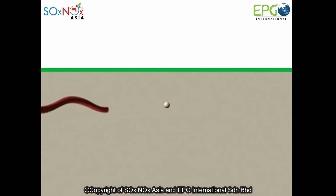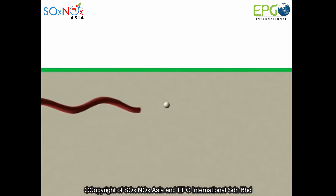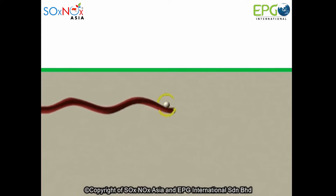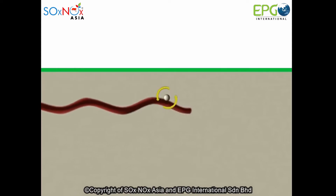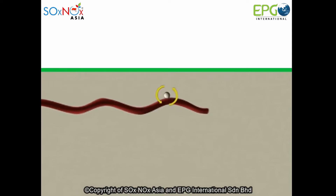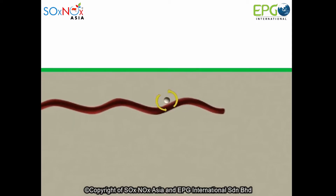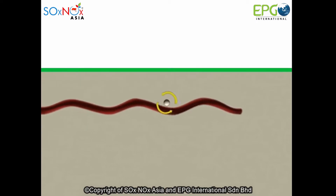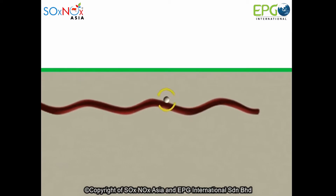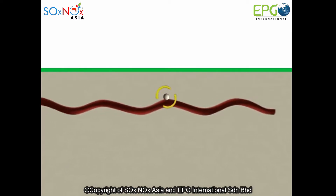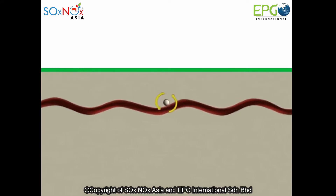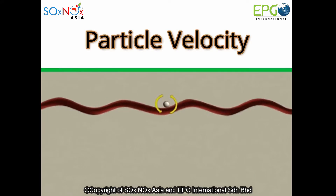Consider a particle of the Earth that lies just below the surface. As a ground wave from a nearby project or event reaches the particle of the Earth, the particle moves in response to the energy of the wave. The speed of the particle movement is referred to as the particle velocity.